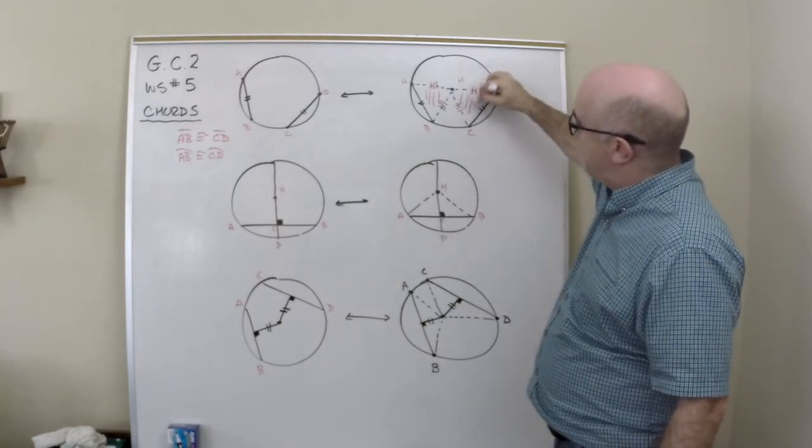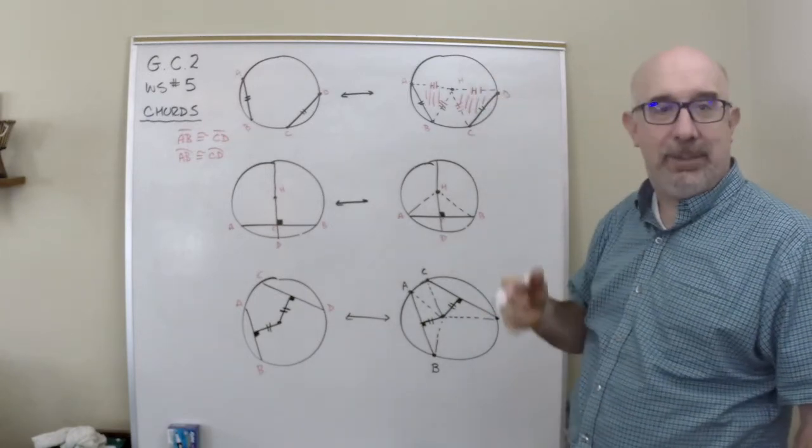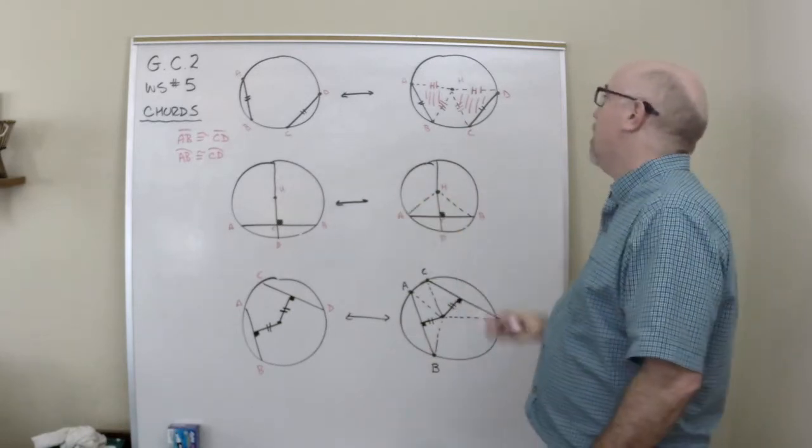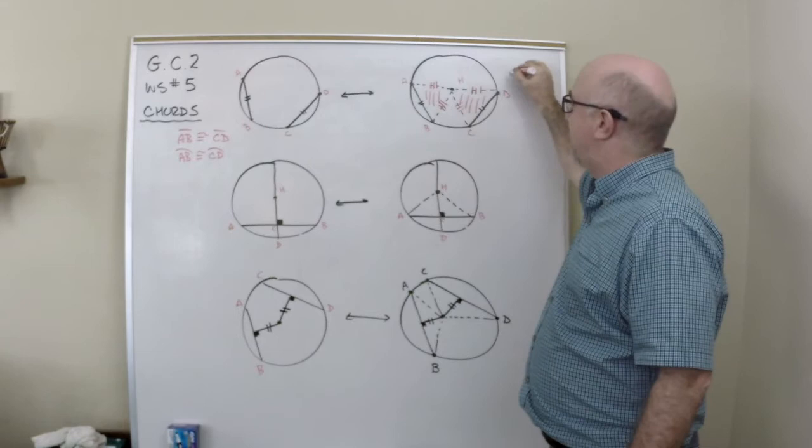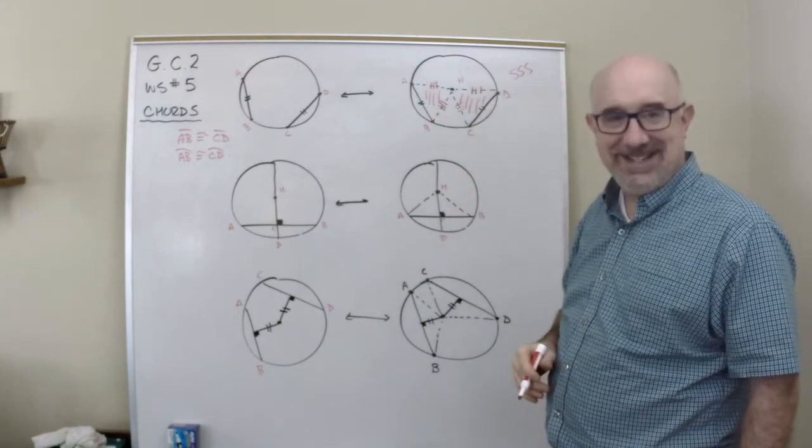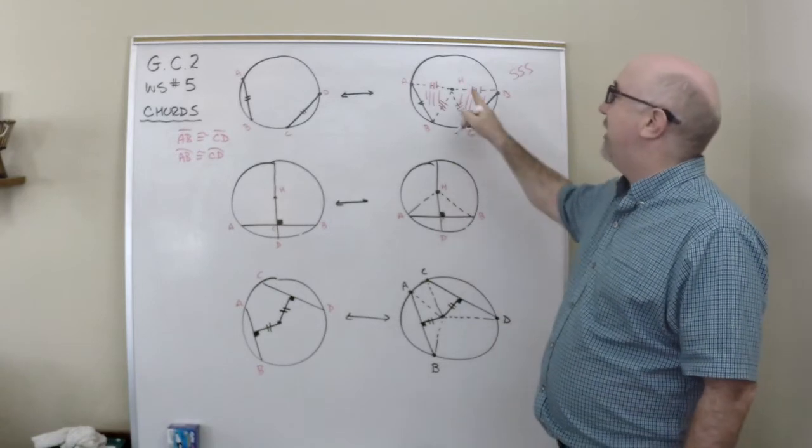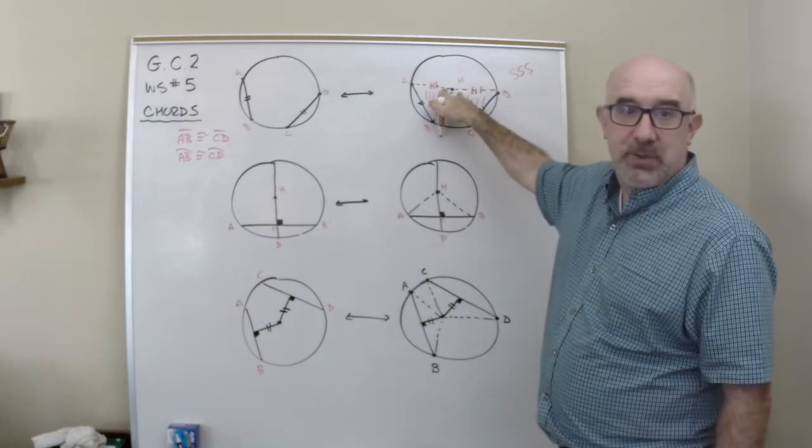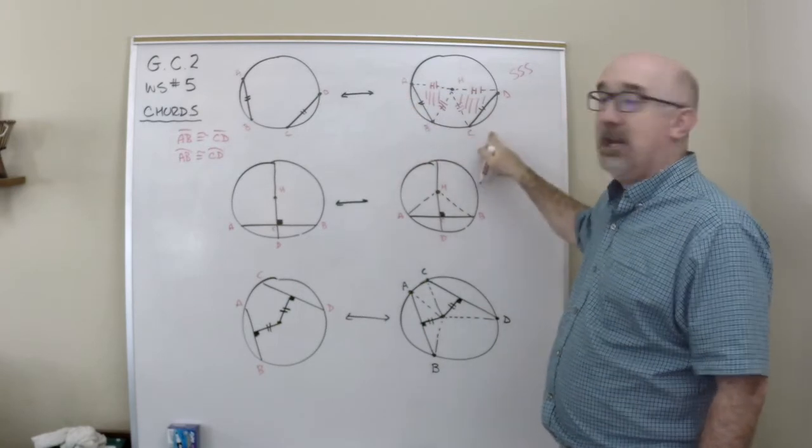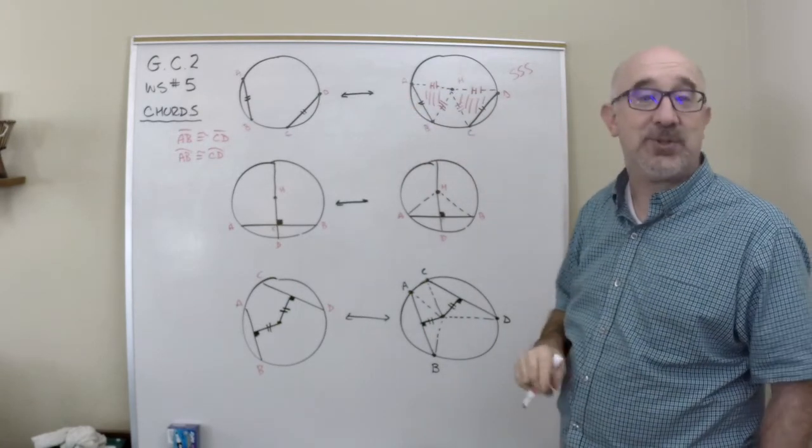This one also has two triple dashes and one double dash, which is a congruence of side, side, side. They are identical, which means their central angles would be the same, which means their arcs underneath those same central angles would be the same.